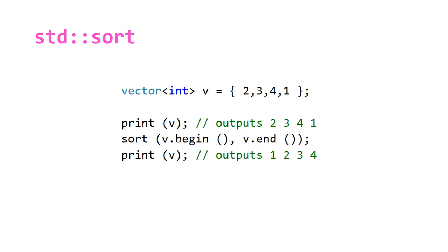Here we're declaring a vector of integers using an initializer list, initially set to 2, 3, 4, and 1. Our print function, not defined here but shown in the corner, prints out the elements with spaces in between. This line print(v) will output 2, 3, 4, 1.